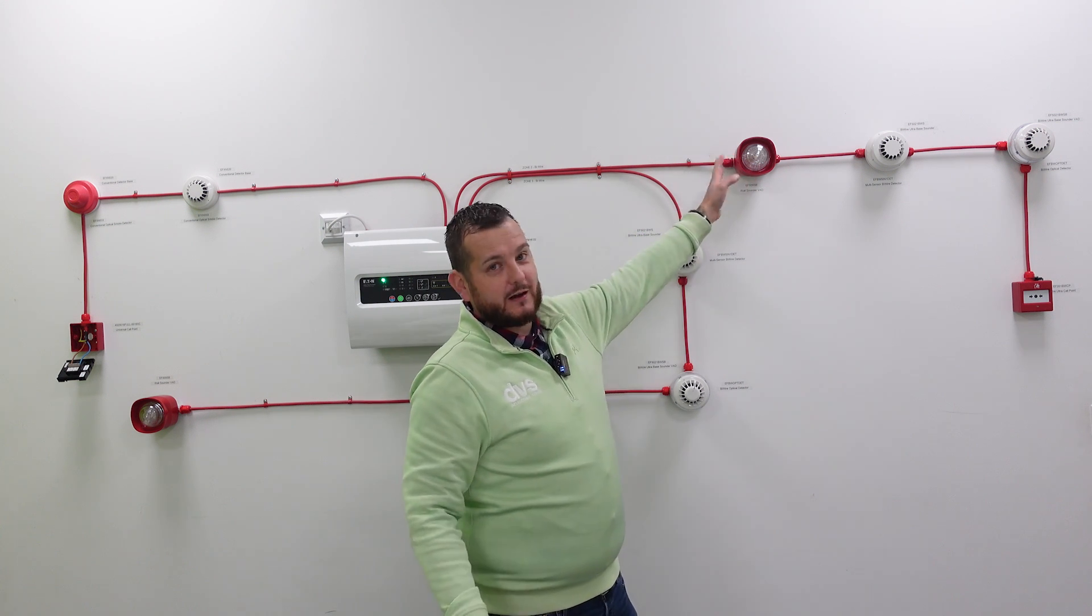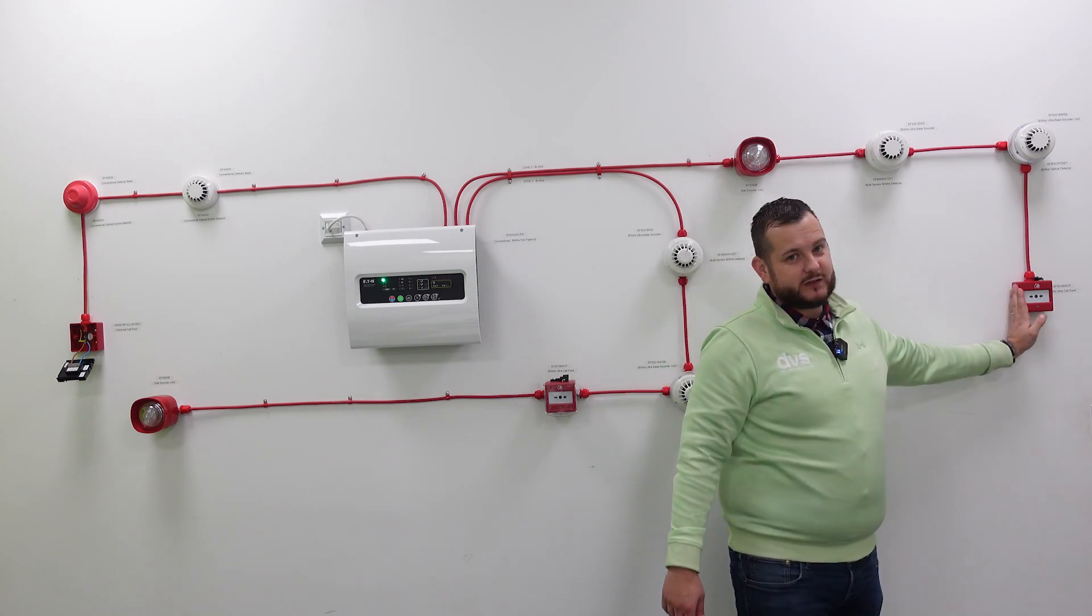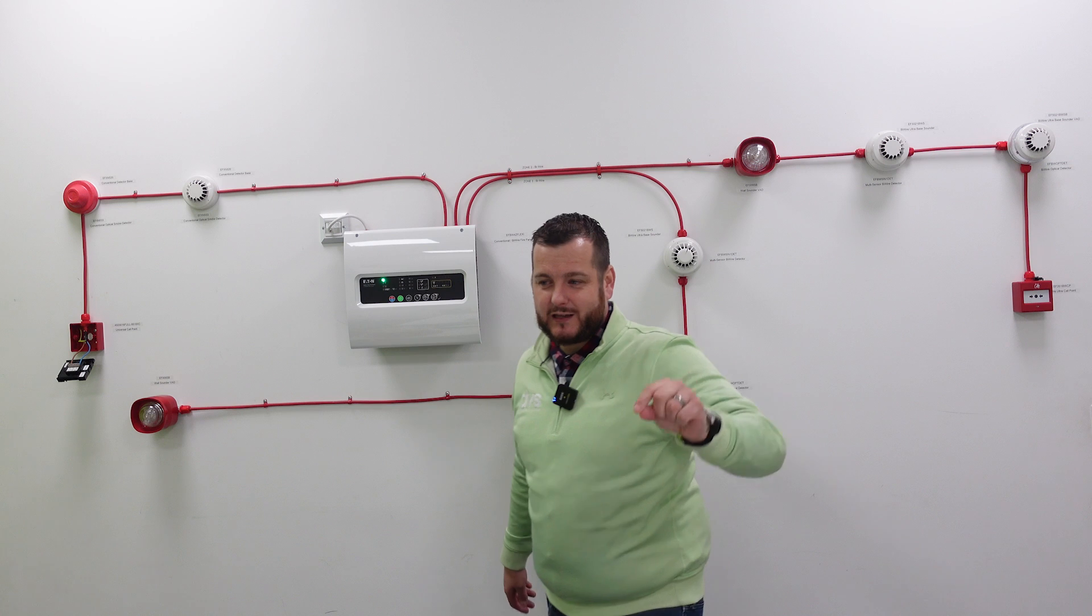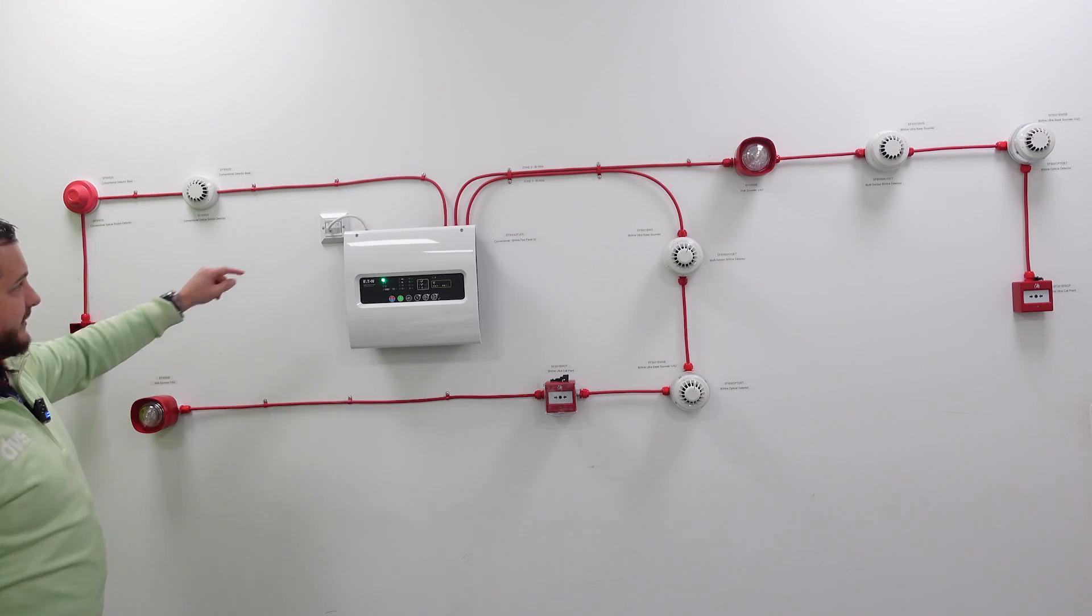Effectively using a single two core cable, like I've got in front of me, 1.5 millimeter two core enhanced cable from our partner, we're able to run out to the VAD, detector, to the VAD alarm sounder, so visual and audio device, then we've got our detection and our MCPs, our manual call points, on the same cable.